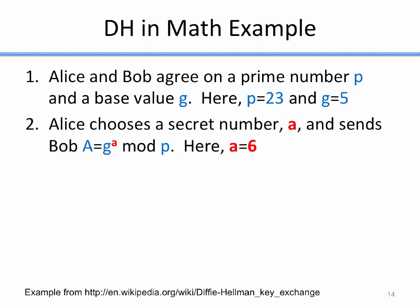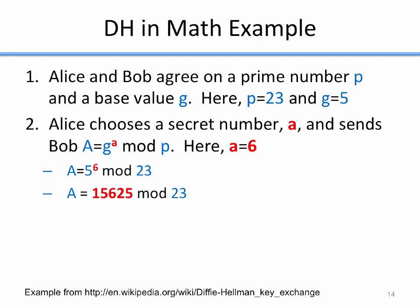Alice is going to choose a secret number, lowercase a, and she's going to send to Bob capital A, which is calculated as g to the power of a modulus p. Let's say Alice's secret number is 6. She would do A equals 5 to the 6 mod 23. 5 to the 6 is 15,625; modulo 23 gives 8. So Alice calculates capital A equals 8. From the color scenario, this is equivalent to Alice choosing her secret color lowercase a, then mixing it with the shared color to get capital A — we're just using modulo exponentiation instead of paint.